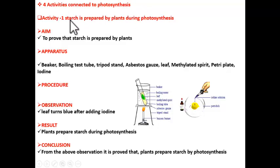The first activity is to prove that starch is prepared by plants during photosynthesis. How can we prove that in our lab? There is a simple test for starch. If we add iodine solution to any starchy substance, that will turn blue. So turning of a substance into blue color is an indication that the substance contains starch.